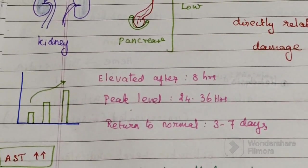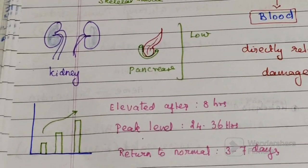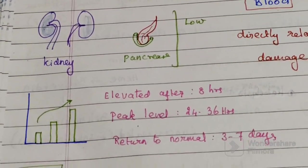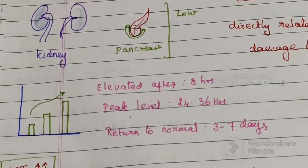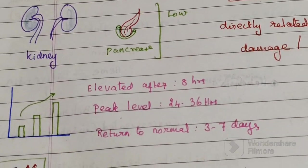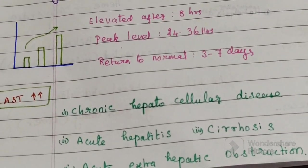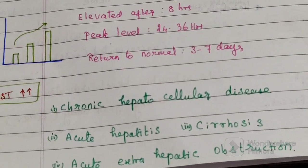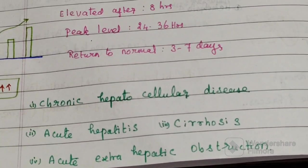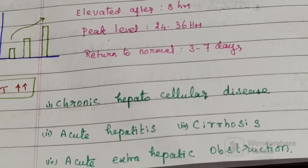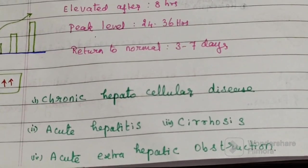AST level is elevated after 8 hours of injury, peaks at 24 to 36 hours, and returns to normal within 3 to 7 days. AST levels increase in conditions such as chronic hepatocellular disease, acute hepatitis, cirrhosis, and acute extrahepatic obstruction.